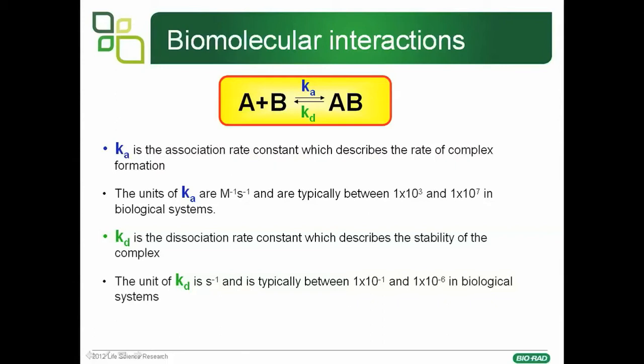The Langmuir model assumes that the interaction is one-to-one between the analyte and the ligand, which proceeds forward with a rate constant Ka, typically between 10³ and 10⁷. The complex AB falls back apart to separate components A and B with a dissociation rate constant Kd, which has units of per second. Typically, these rates are between 0.1 and, for very slow dissociations, up to 10⁻⁶.